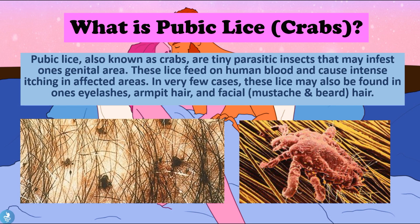So what is pubic lice or crabs? Pubic lice, also known as crabs, are tiny parasitic insects that may infest one's genital area. These lice feed on human blood and cause intense itching in infected areas. In very few cases these lice may also be found in one's eyelashes, armpit hair, and facial hair — meaning moustache and beard hair. They can also be found in other parts of the body with coarse hair, and they cause great discomfort for the patient.